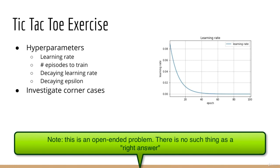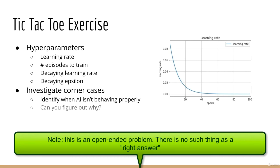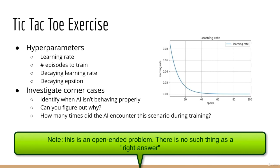Fourth, there are corner cases where the AI might not know how to behave properly. Assuming you can identify those cases, can you figure out why the AI doesn't do the right thing? Perhaps you might want to find out how many times the AI actually encountered that scenario during its training. Give these a try and I'll see you in the next lecture.